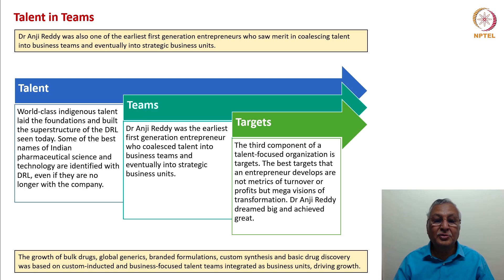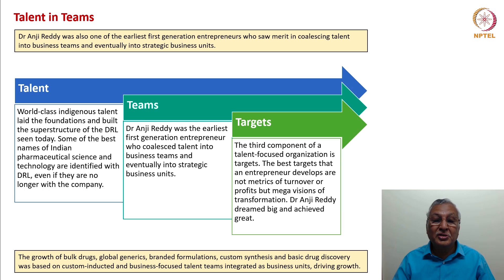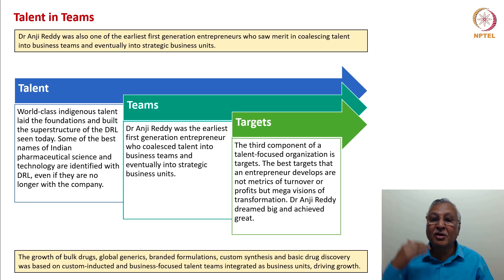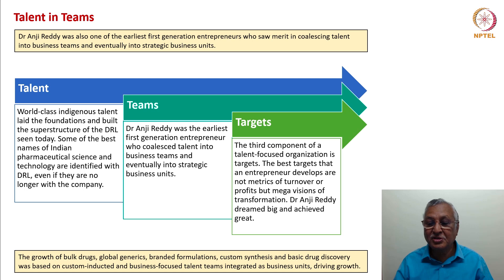Dr. Anji Reddy was the earliest first-generation entrepreneur who coalesced talent into business teams and eventually into strategic business units. He did not organize the company only in functional units; at the earliest opportunity he created business verticals — generics as a separate business, API as a separate business, biologics as a separate business, and so on. The third component of a talent-focused organization is targets. The best targets are not metrics of turnover or profits but mega visions of transformation. Dr. Anji Reddy dreamed big and achieved great.